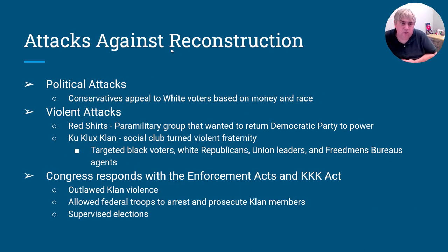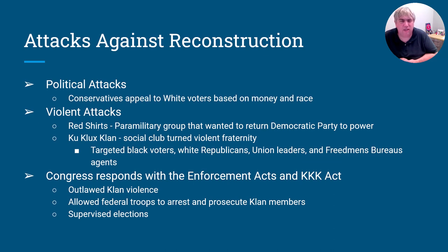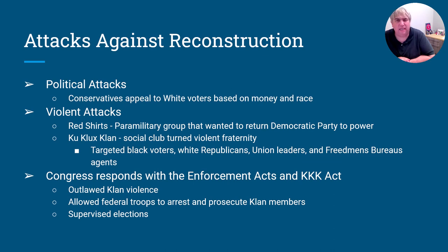Not everybody appreciated Reconstruction. There were political attacks based on money and race, and actual physical attacks. The Red Shirts wanted the Democratic Party back in power in the South. The KKK became a violent social fraternity with equal-opportunity hate — targeting black voters, white Republicans, union leaders, Freedmen's Bureau agents, and anyone helping African Americans vote. In the early 1870s, Congress passed the KKK Act and the Enforcement Act, officially outlawing Klan violence, but by 1873 the Democratic Party was back in full control in the South and would try to sweep African American equality under the rug.